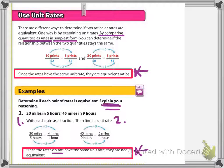So in problem number 1, 20 miles in 5 hours and 45 miles in 9 hours. If you change each rate to a fraction and then simplify it to its unit rate as the second step.